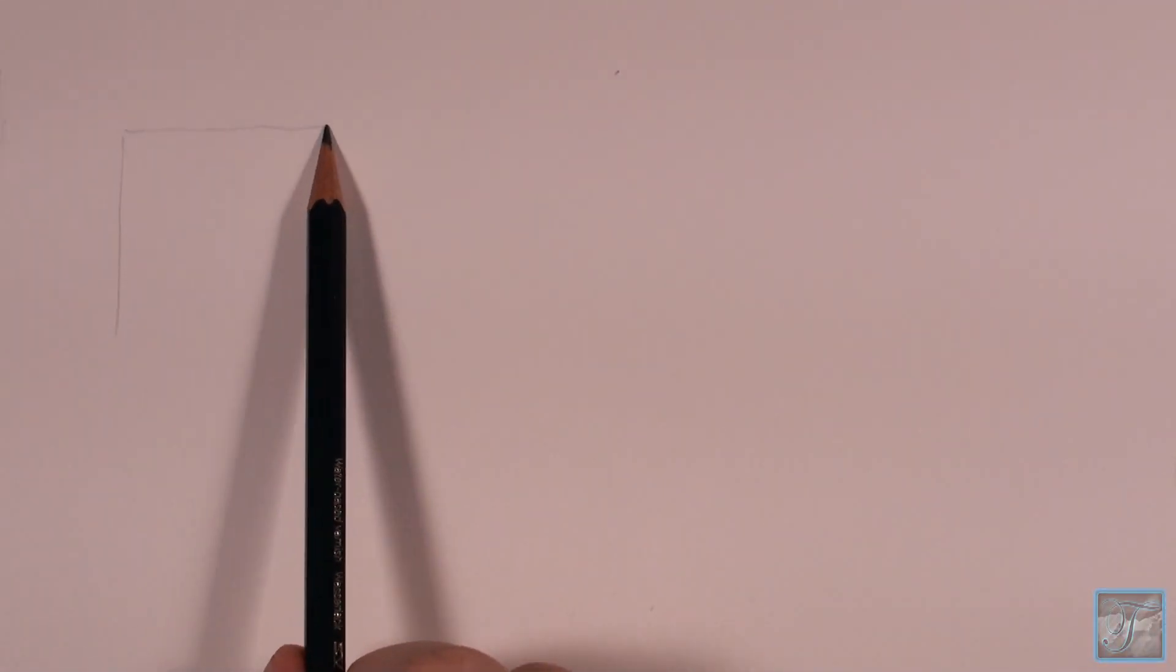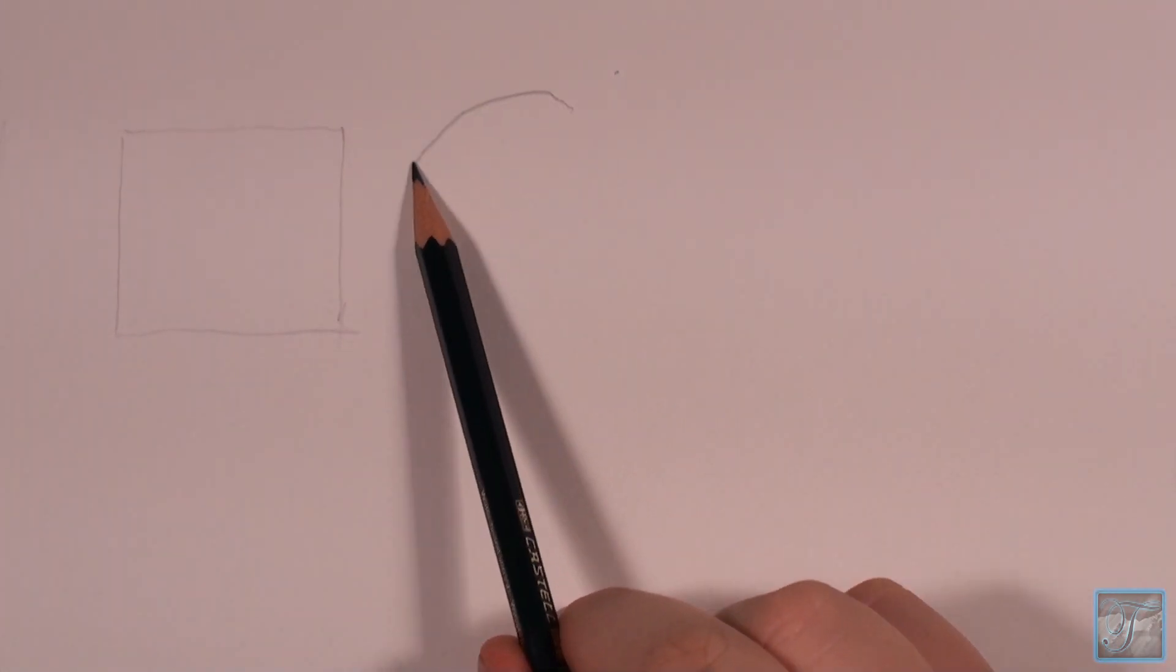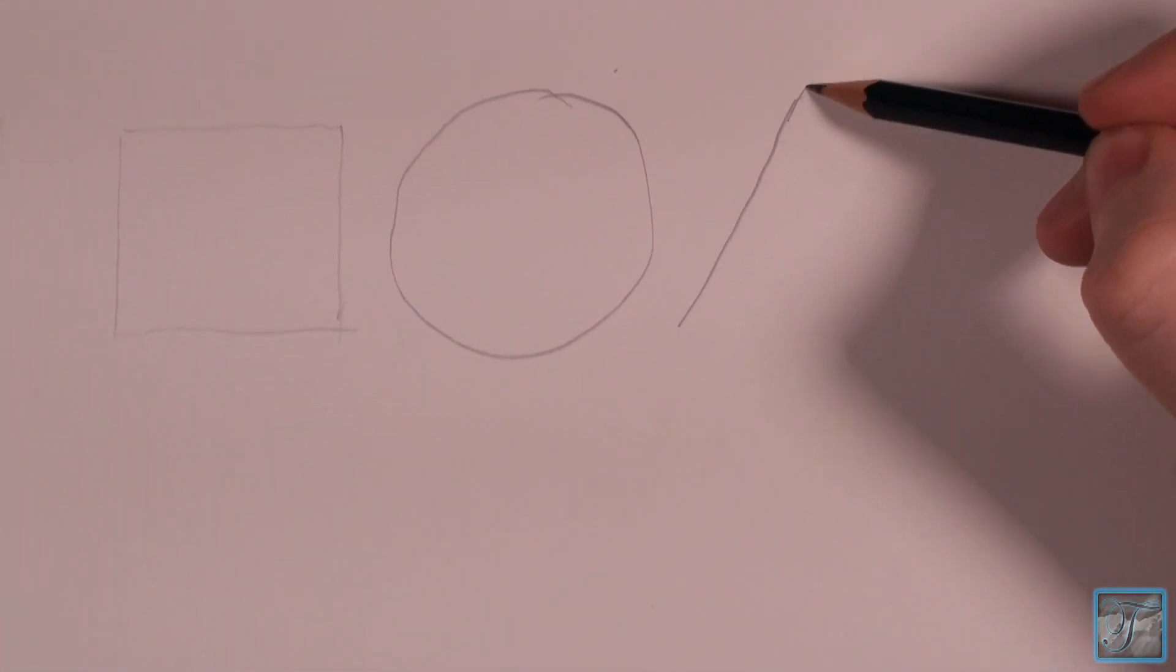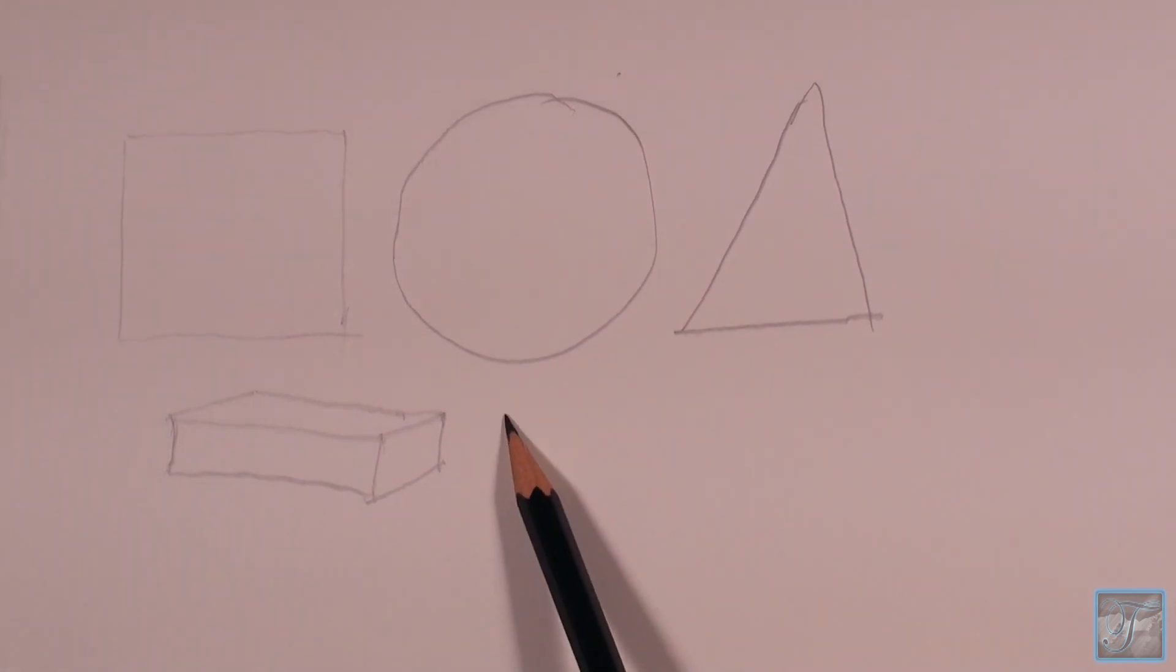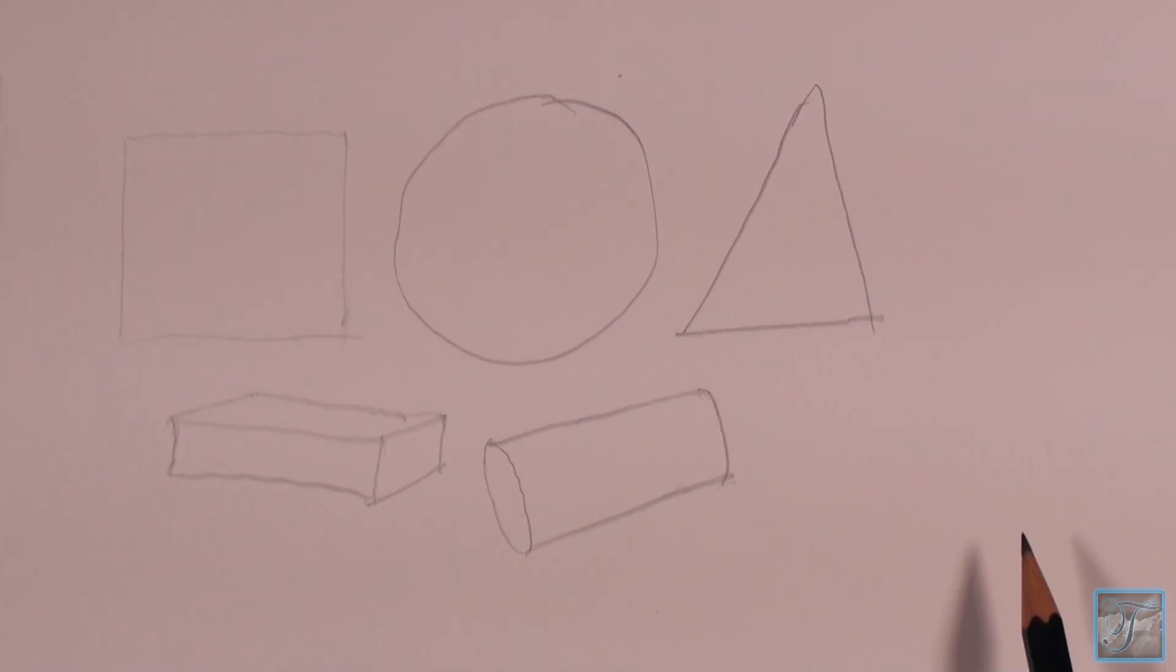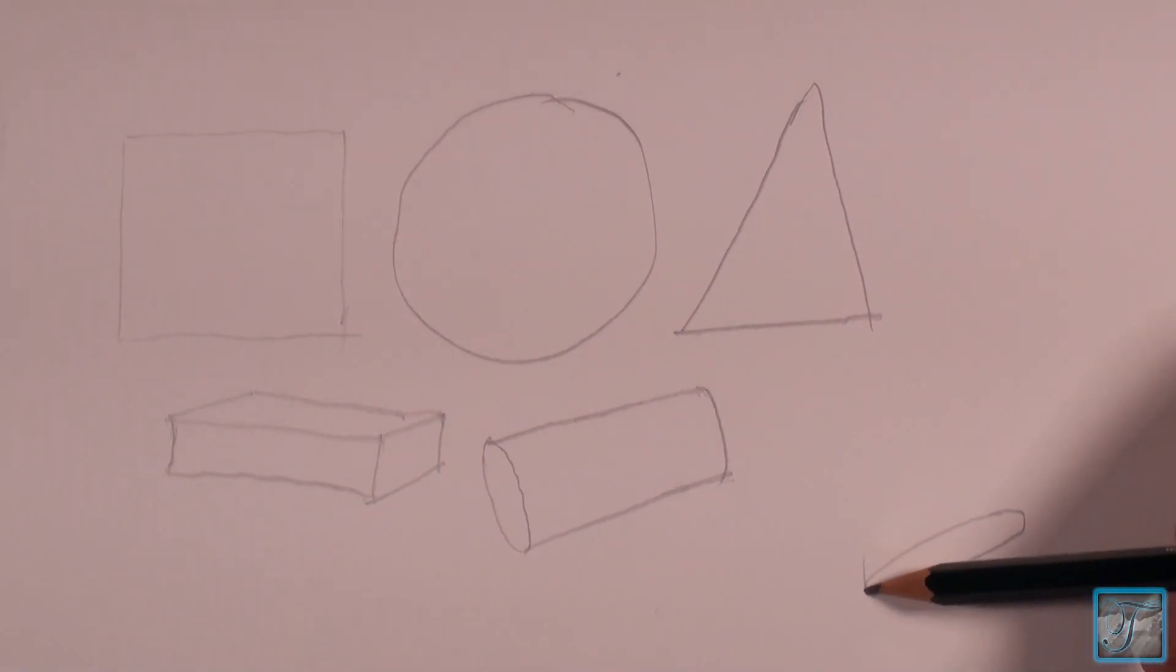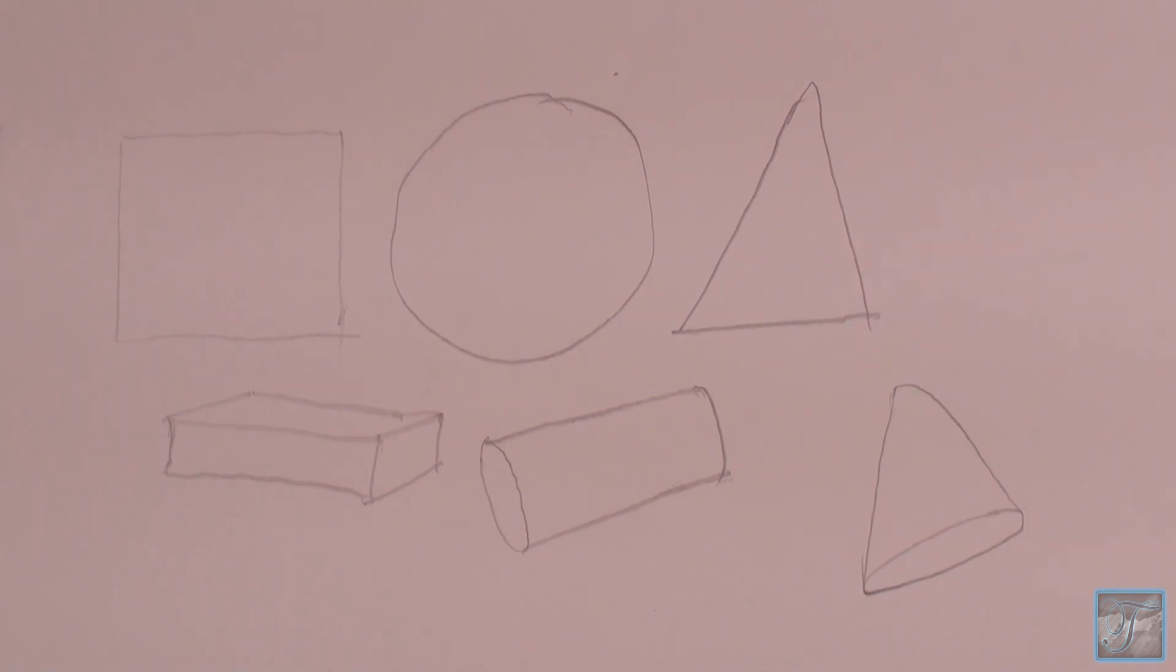When you break rocks down into their simplest forms, they can often form the shapes of squares, circles, and triangles. Remember that rocks are three-dimensional closed shapes, so drawing something like a cube, cylinder, sphere, or even a cone will much better represent what a rock actually looks like. Of course, this is just a start. You need to add a lot more detail to make it look more like a rock.